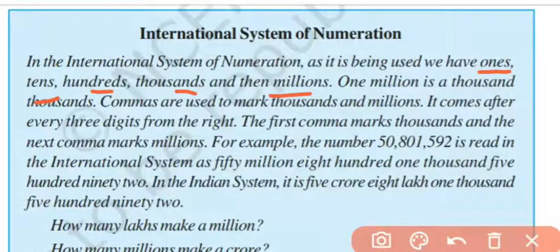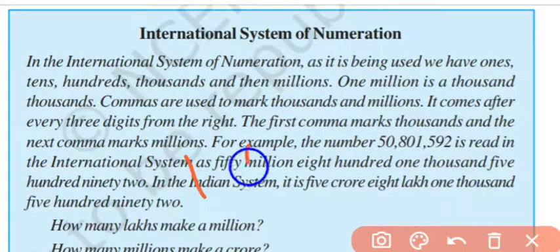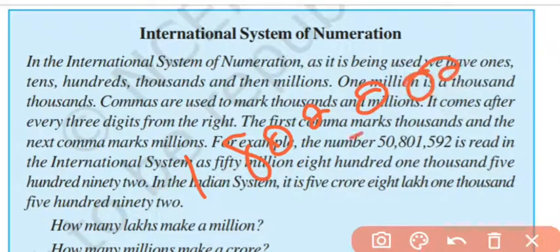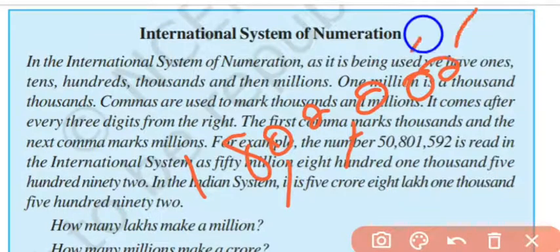So, 1000 per million. In the Indian System, we have 1, 10, 100, 1000, then 10,000, then millions. 1 million is 1,000,000 — that is one million, which has six zeros. In the Indian system, we have: one, ten, hundred, thousand, ten thousand, lakh, ten lakh — which equals one million.